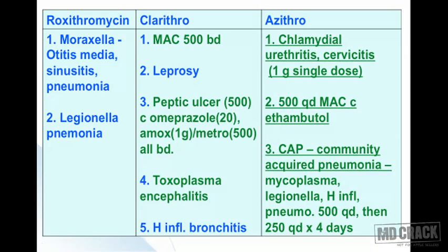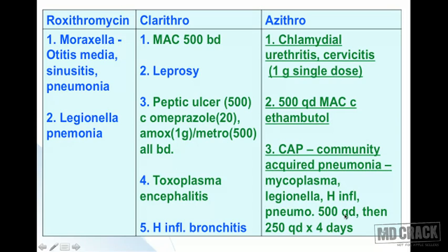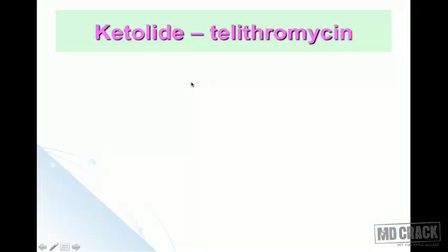Azithromycin — the longest-acting macrolide with elimination half-life of 68 hours — is used for chlamydial urethritis and cervicitis in a single dose of 1 gram. For MAC, 500 mg every day along with ethambutol. For community-acquired pneumonia (CAP), caused by organisms such as Mycoplasma, Legionella, H. influenzae, and pneumococci: 500 mg on day one, then 250 mg every day for four days.